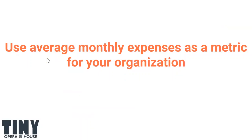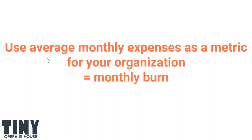There's a metric called a monthly burn — what does it cost you on an average month to run the organization? That can start to influence your thinking: every month I need to raise $10,000 because that's my average monthly burn in my cash flow document. So every month, that's my minimum goal for the organization. As you start to generate these numbers, you get a lot of useful information about how to manage your organization better.